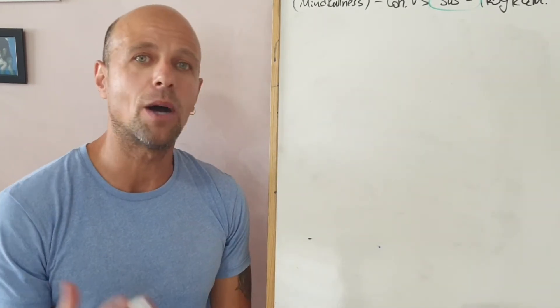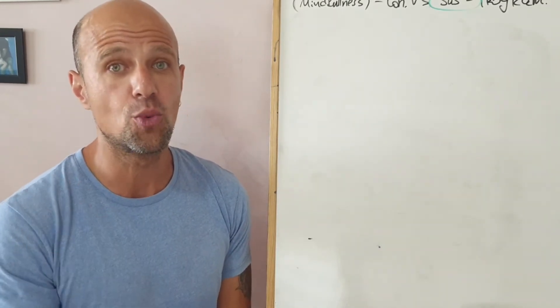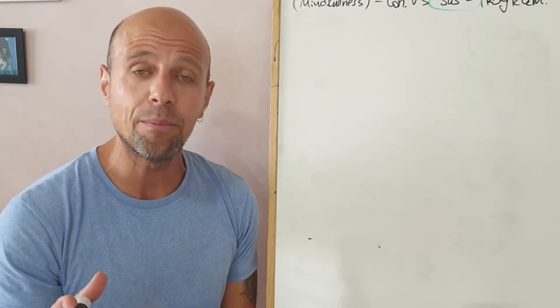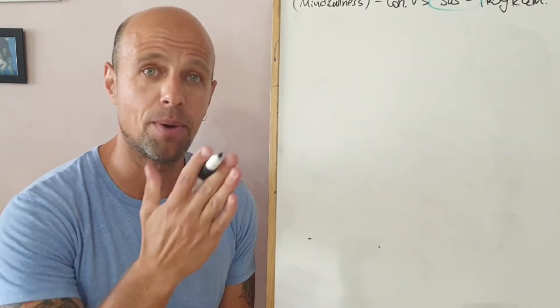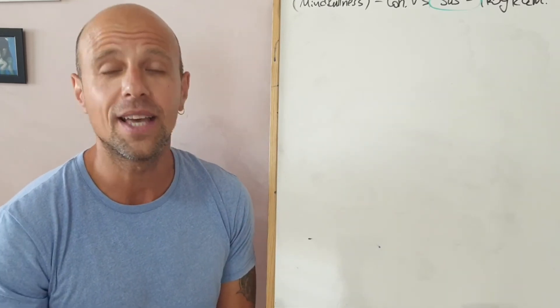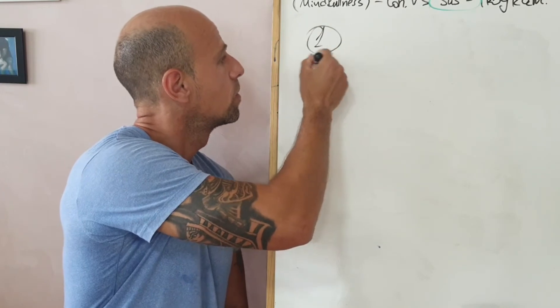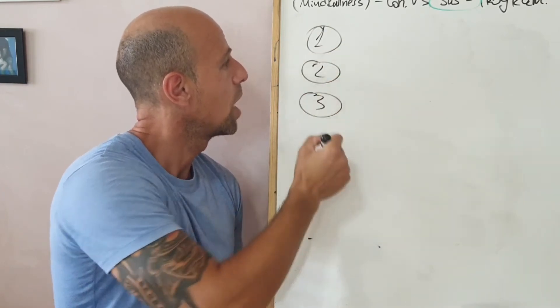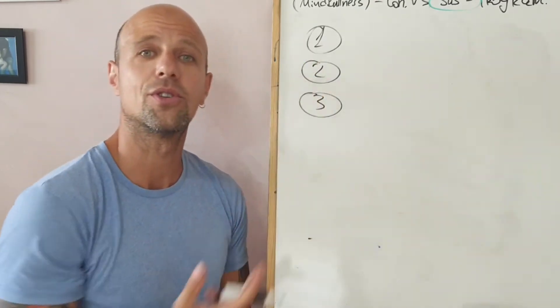So, when we talk about hybrid training or goal cycling, we usually address no more than three goals. Why? Because we have only one pie. And if you cut the pie to ten, you basically have nothing left. So, I have the one, two, three, the numbers here. Okay?